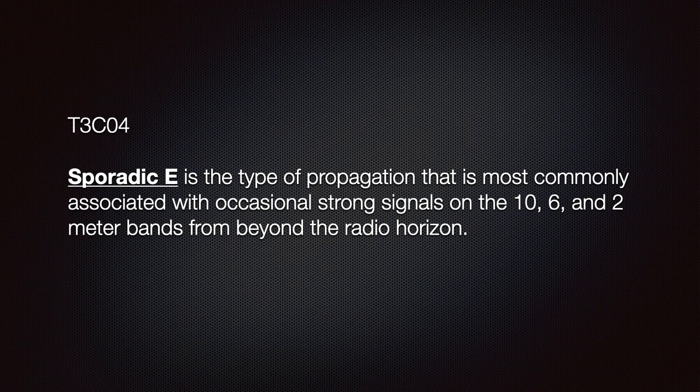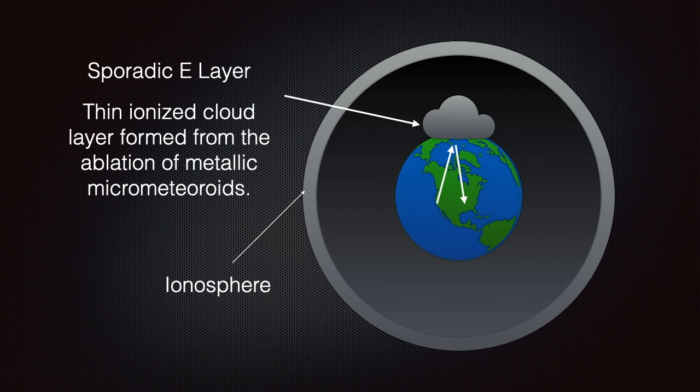You should also understand that sporadic E is a type of propagation most commonly associated with occasional strong signals on the 10, 6, and 2 meter bands from beyond the radio horizon. A thin cloud layer composed of ionic particles left behind by micro-meteoroids burning up in the atmosphere forms a sporadic E layer, which behaves similarly to the ionosphere.